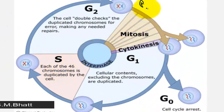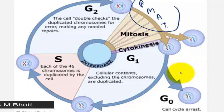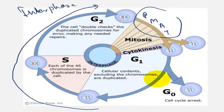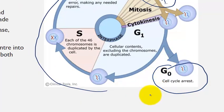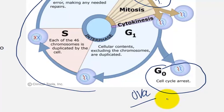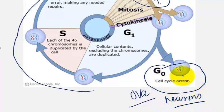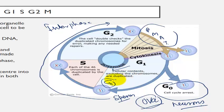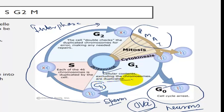Before prophase, metaphase, anaphase, and telophase, there is another phase at the start of cell division called interphase, which begins with G1, S, and G2 phases. There is also a G0 phase for cells that are not dividing — for example, oocytes and neurons do not divide. An oocyte remains at rest until it receives a signal. Once a cell enters G1 phase, all protein and cellular contents are duplicated — except the chromosomes.